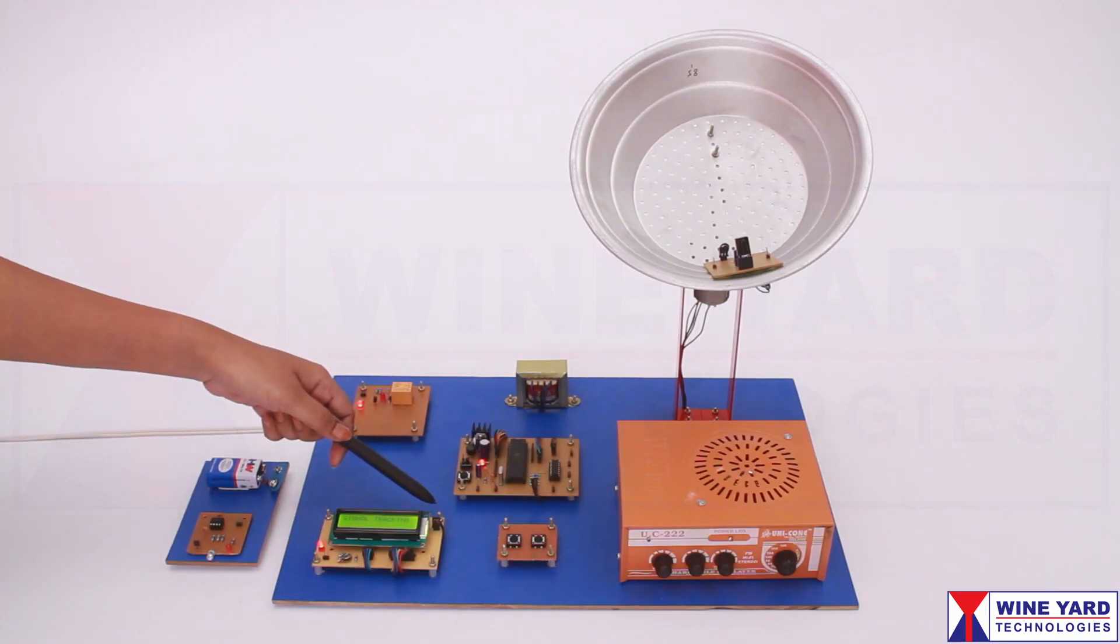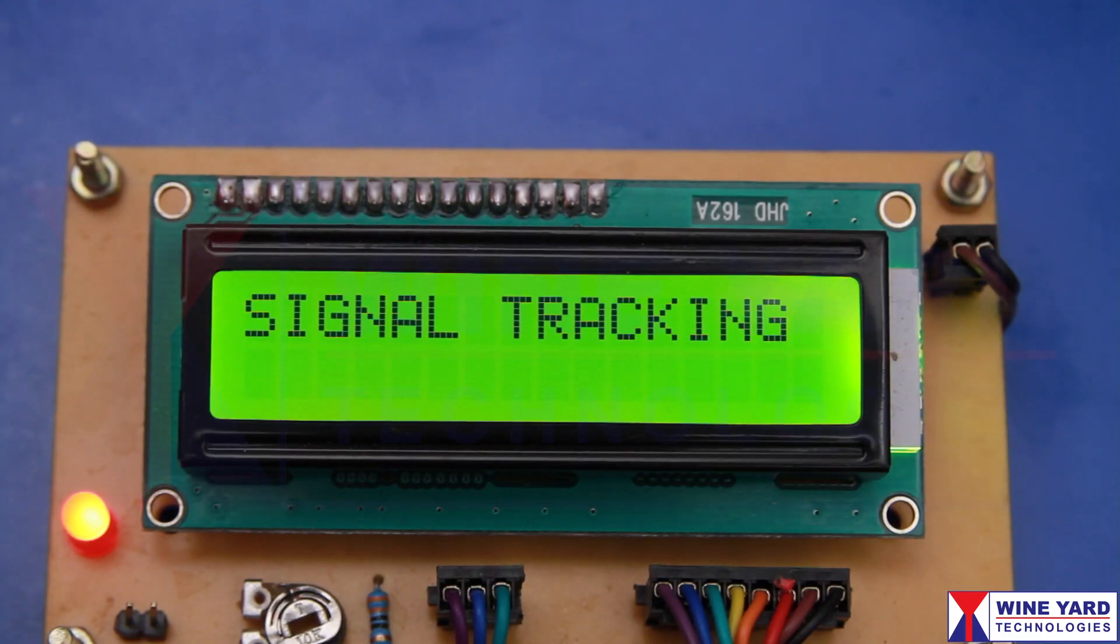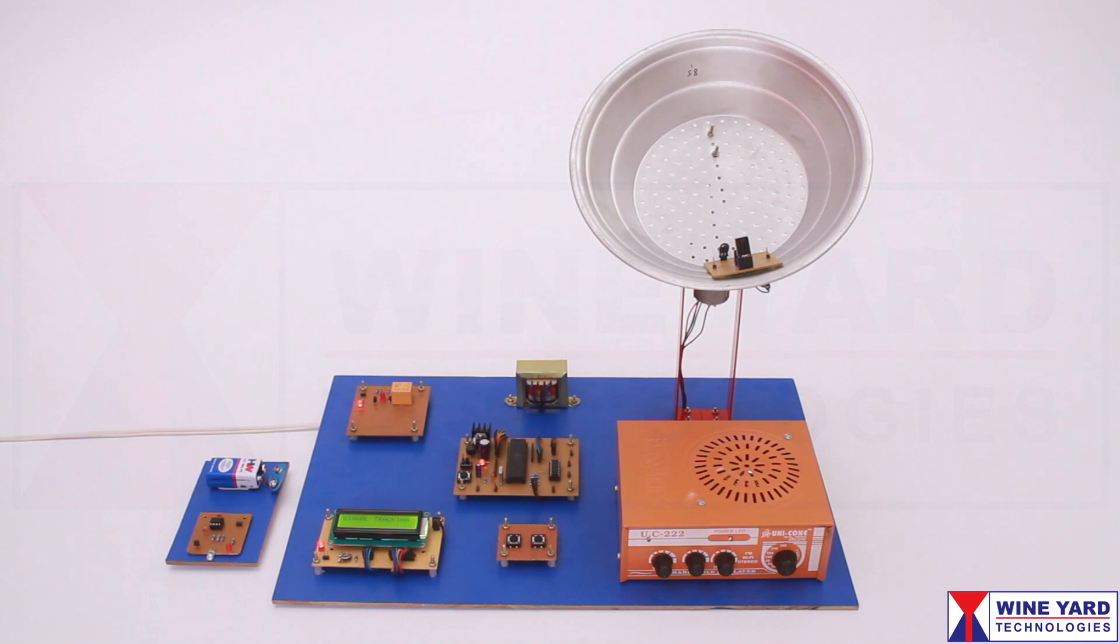This is a 16x2 LCD to display the status of signal tracking. You can adjust the display contrast using this preset.